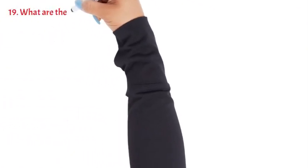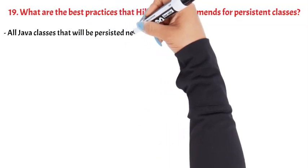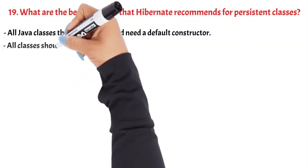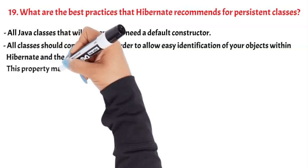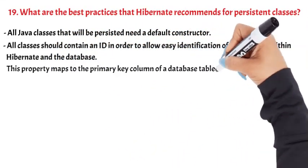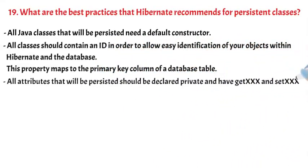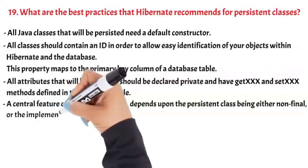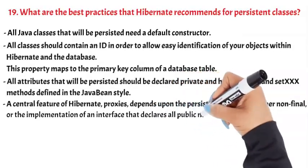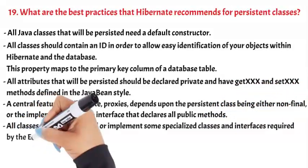Question 19: What are the best practices that Hibernate recommends for persistent classes? All Java classes that will be persisted need a default constructor. All classes should contain an ID to allow easy identification within Hibernate and the database — this property maps to the primary key column. All attributes that will be persisted should be declared private and have getXX and setXX methods defined in JavaBean style. Hibernate proxies depend upon the persistent class being either non-final or the implementation of an interface that declares all public methods. All classes should not extend or implement specialized classes and interfaces required by the EJB framework.